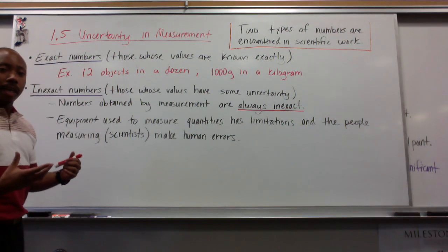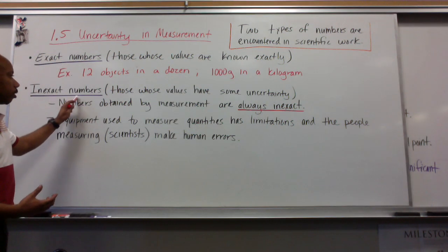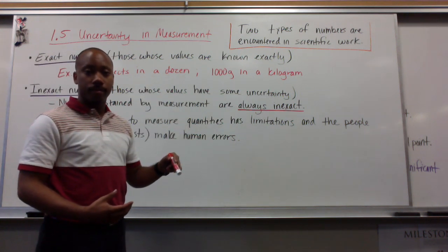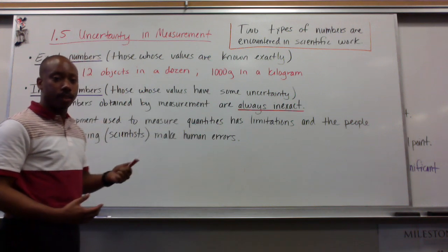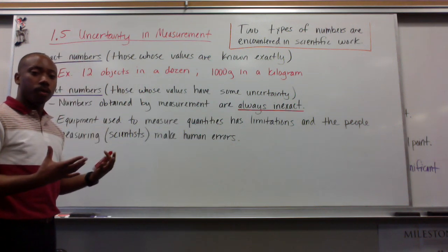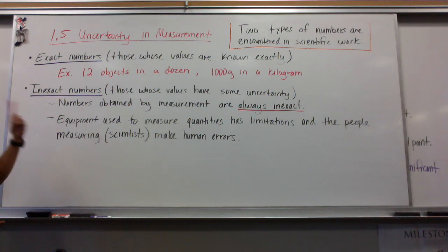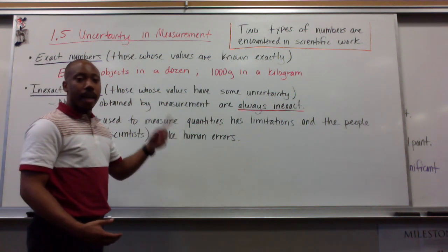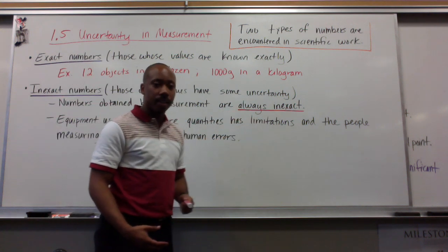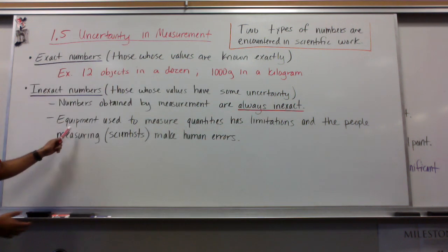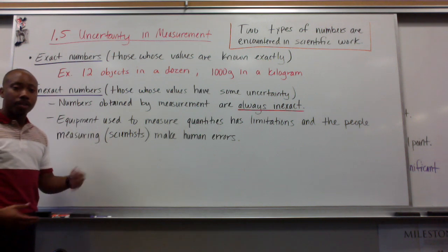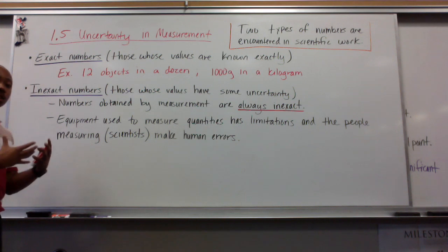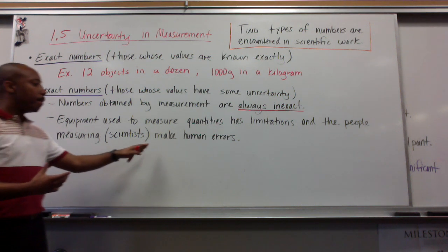The other type of numbers we'll encounter are inexact numbers, whose values are uncertain. These are the ones that we handled in the laboratory. They have uncertainty because they're obtained by measurement, and measurements are always inexact. They're inexact because the equipment that we use to measure these quantities has its limitations, and we, the scientists, make human errors.